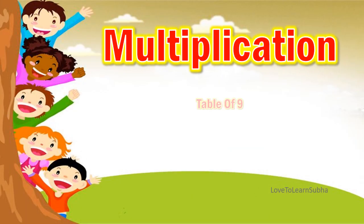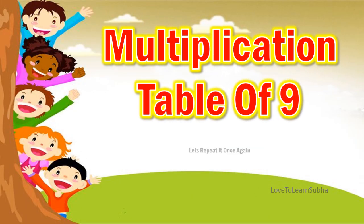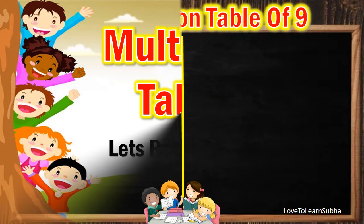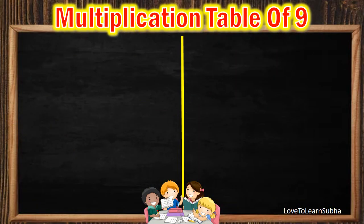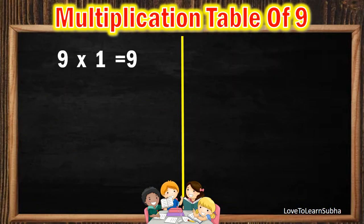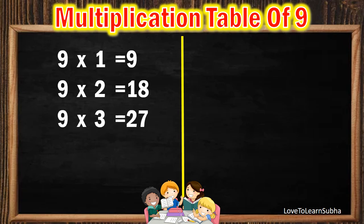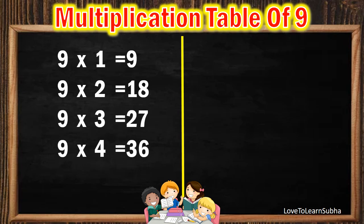Now let's repeat it once again. 9 1's are 9. 9 2's are 18. 9 3's are 27. 9 4's are 36.